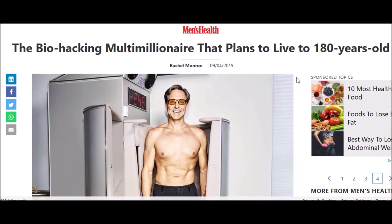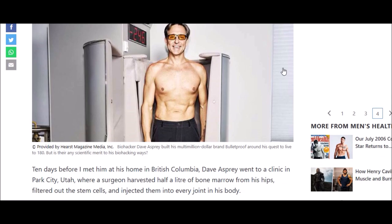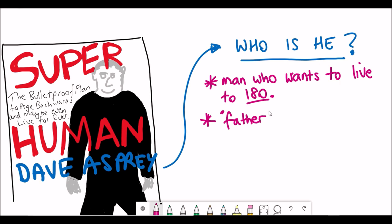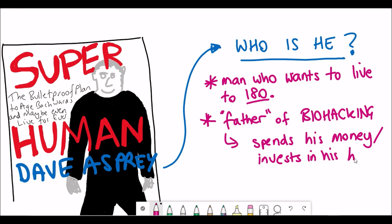So who is Dave Asprey and why does he have this information? I first heard of Dave when reading an article about a man who wanted to live to 180 - this man is Dave Asprey. To achieve this, Dave uses biohacking, a term that he coined himself, which refers to the art and science of changing the environment around you and inside you so that you have full control over your own biology. For those reasons he's often referred to as the father of biohacking.